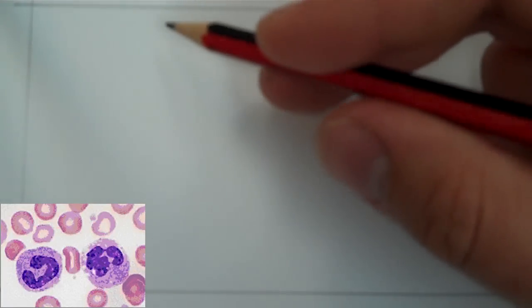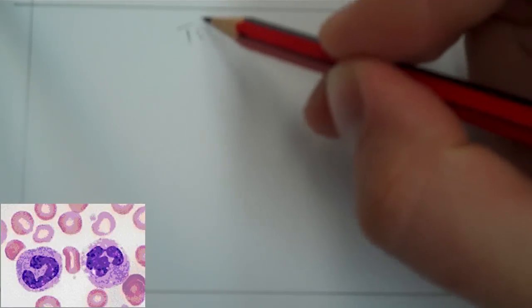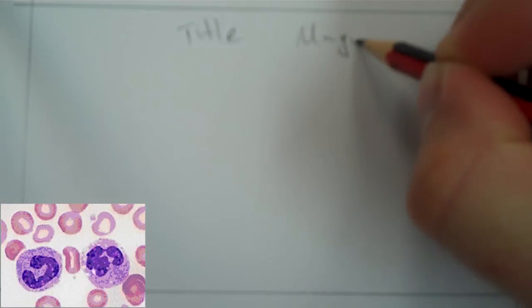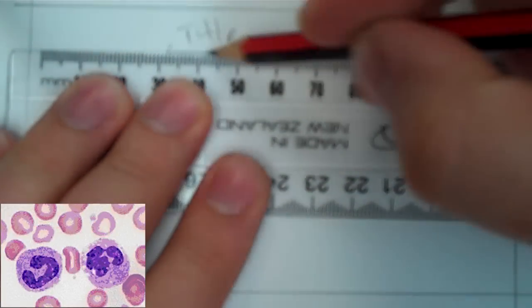So again we could give it a title which would probably be the cell type and the magnification. Okay, underlined. And then let's get on with drawing our cells.